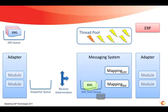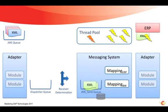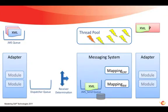Note there is only one of those threads per communication channel, per Java server node on the system. Once persisted in the messaging system, a general purpose thread processes the message through any mapping steps, through any adapters and their modules into the receiver system. Upon success, it marks that message as successfully delivered and returns back to the pool.